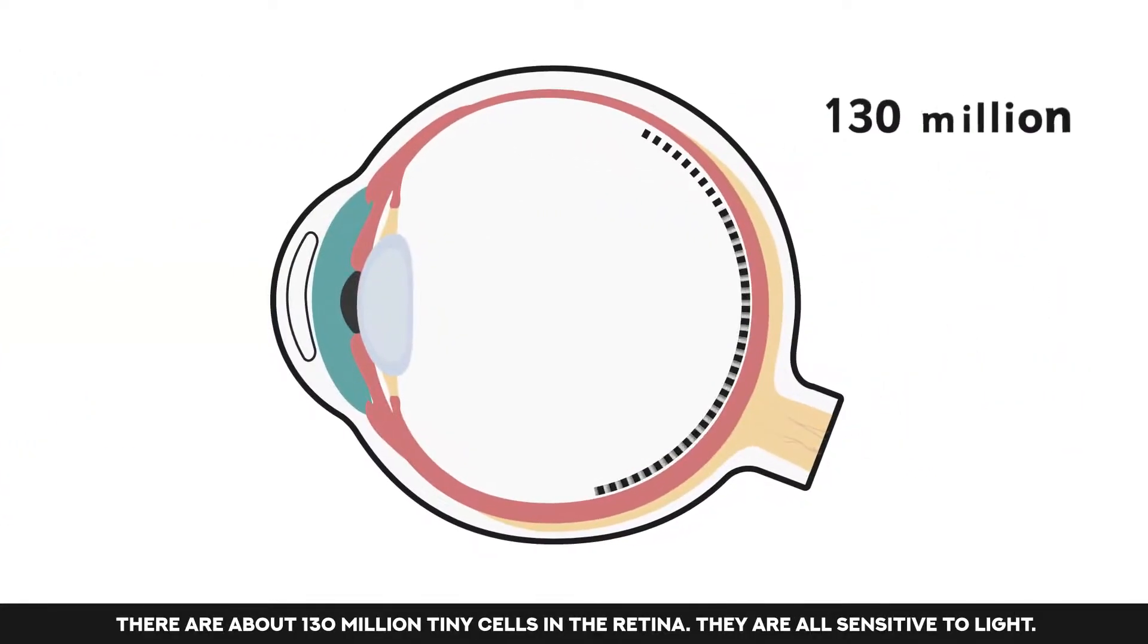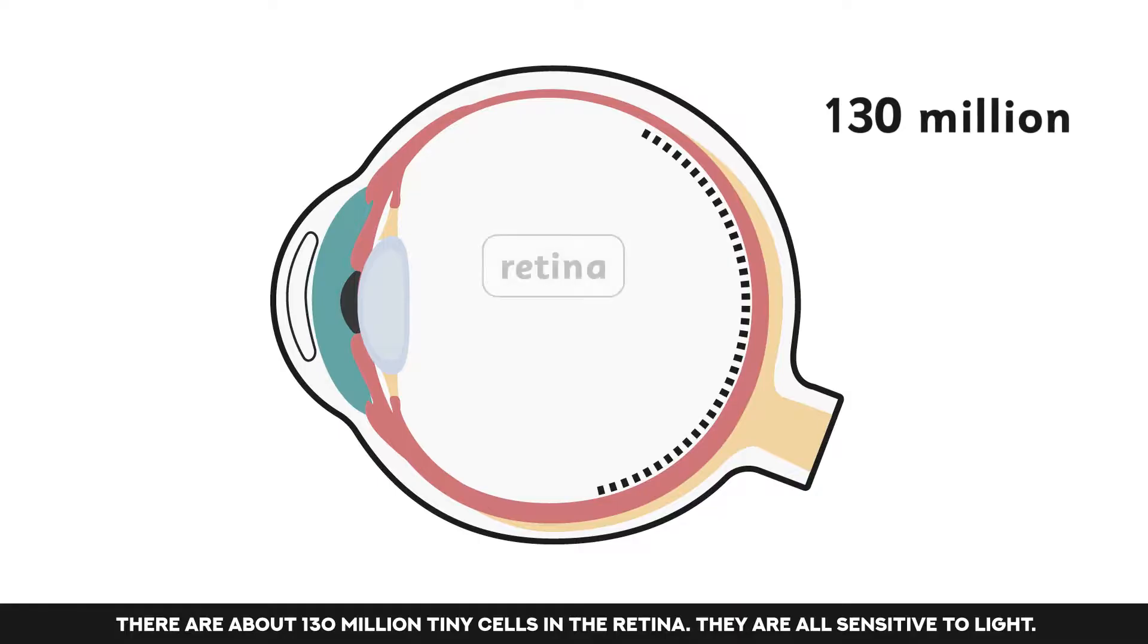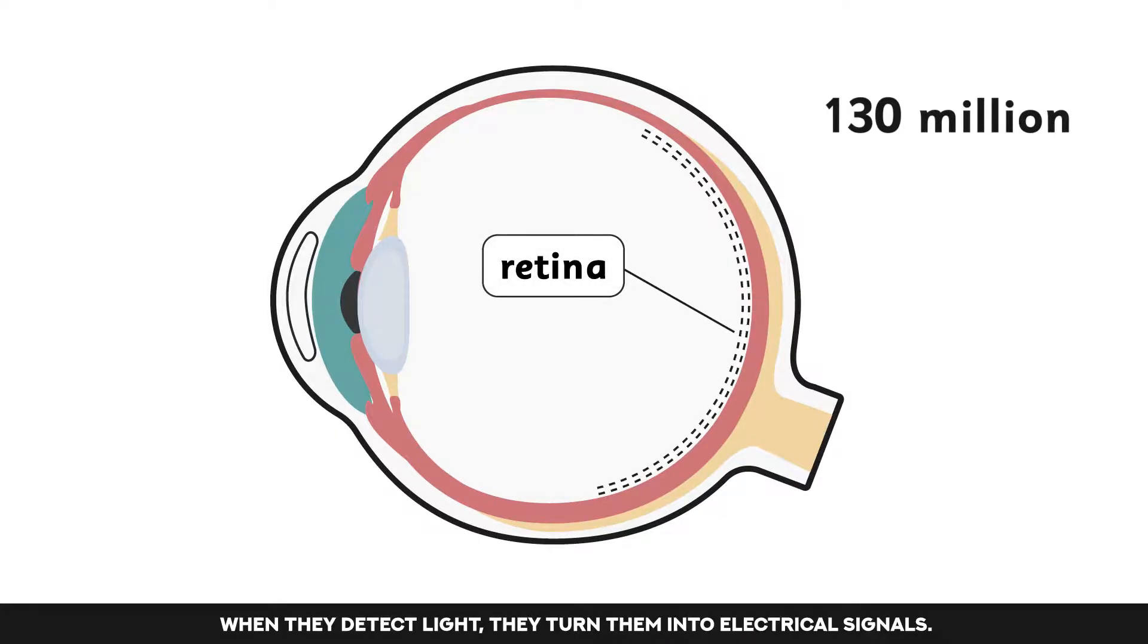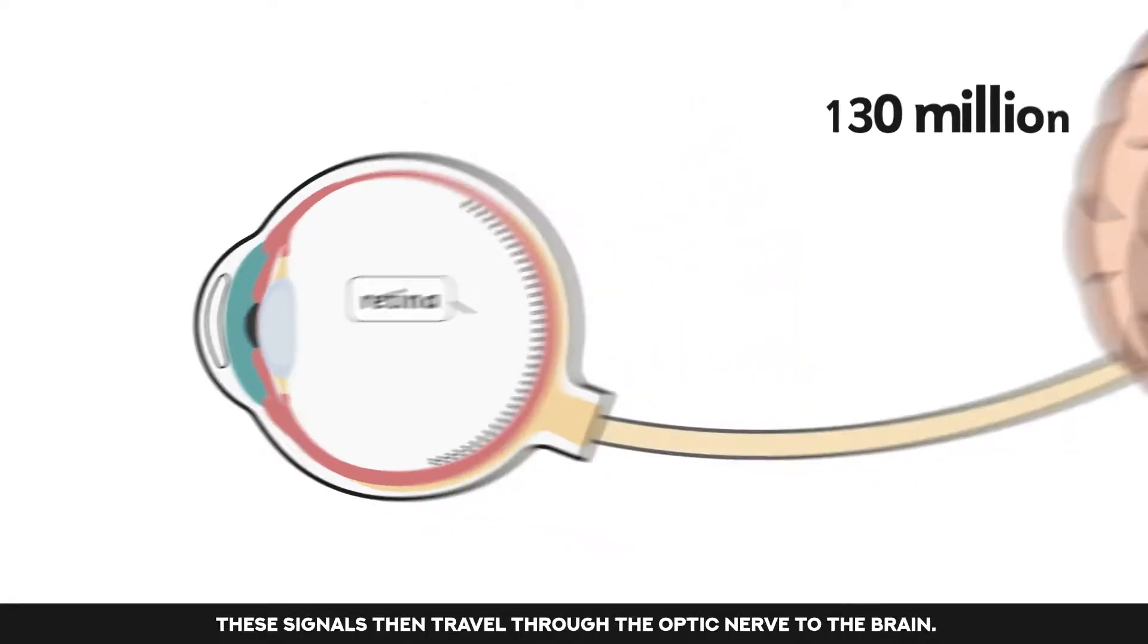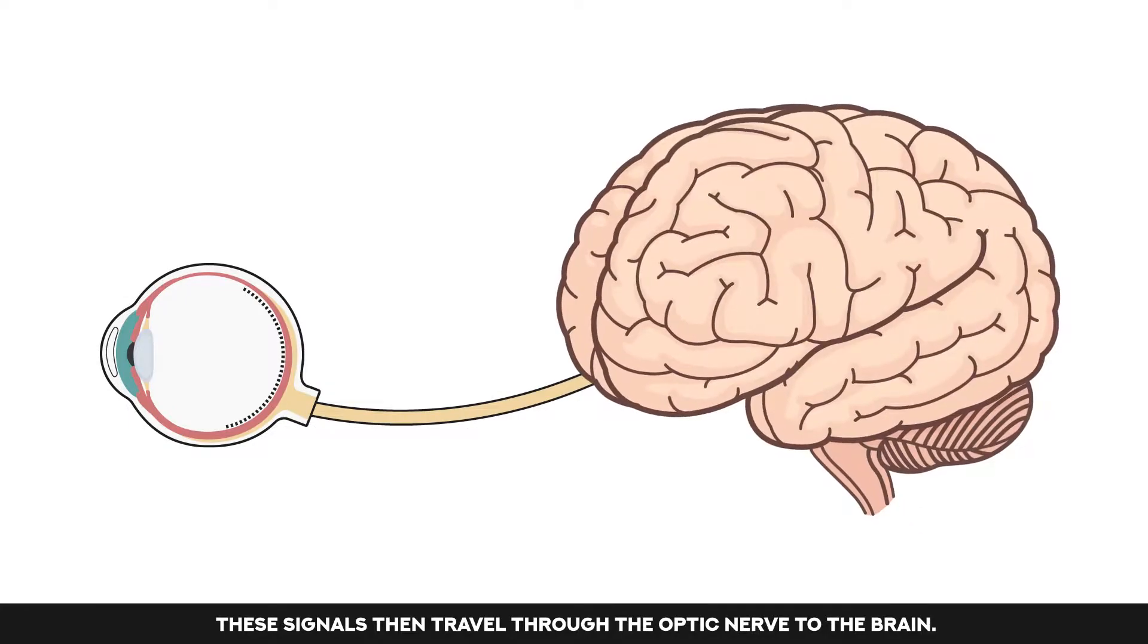There are about 130 million tiny cells in the retina. They are all sensitive to light. When they detect light, they turn them into electrical signals. These signals then travel through the optic nerve to the brain.